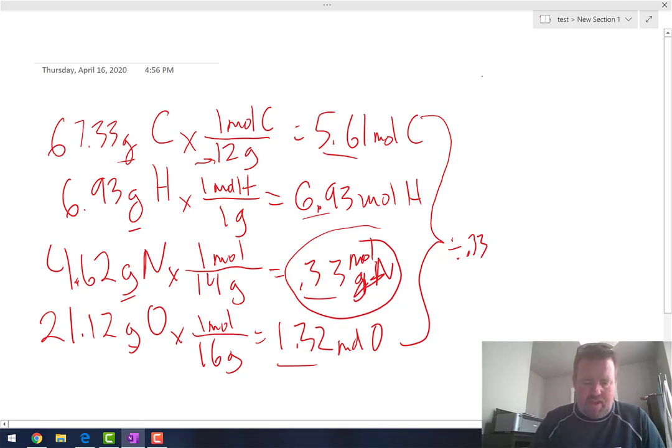So the carbon one, 5.61 divided by 0.33 equals 17 carbons. For hydrogen, 6.93 divided by 0.33 equals 21 hydrogens.